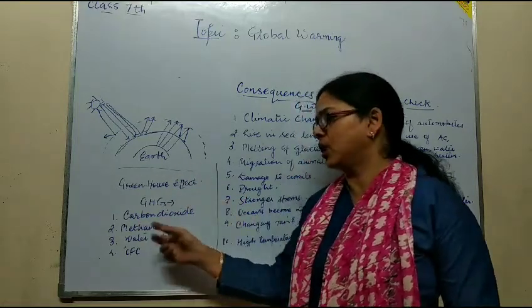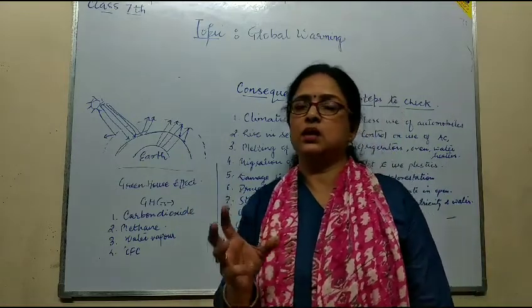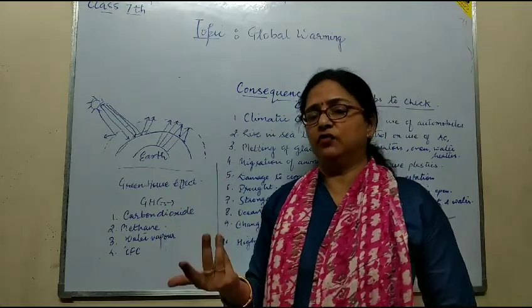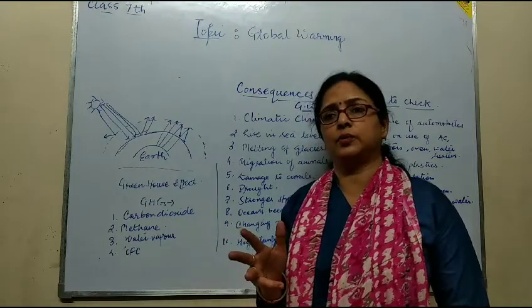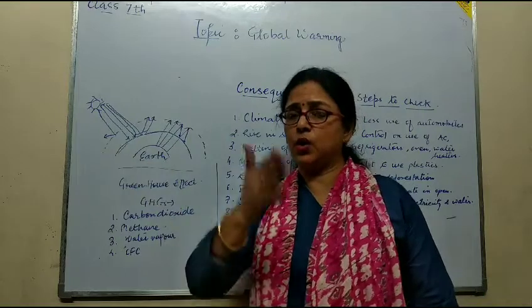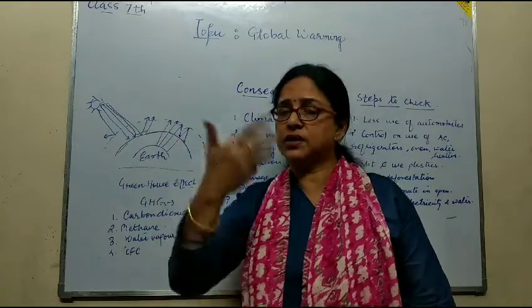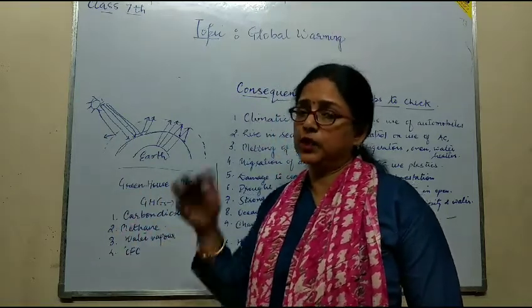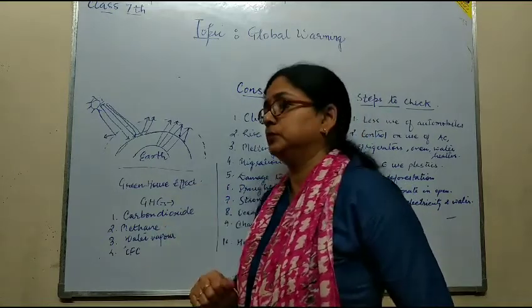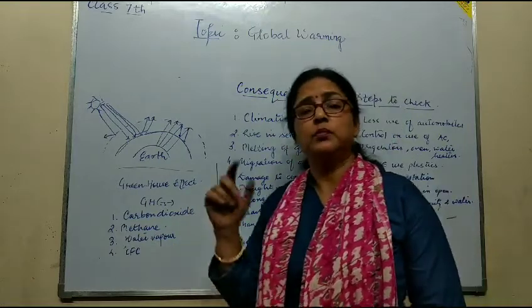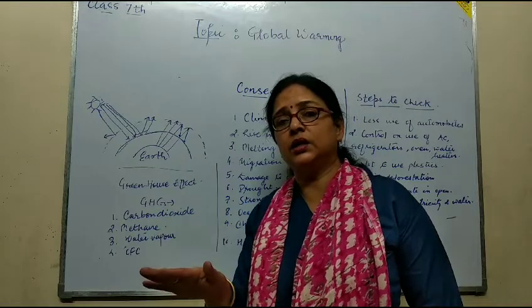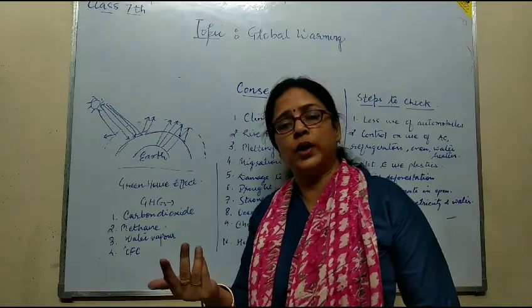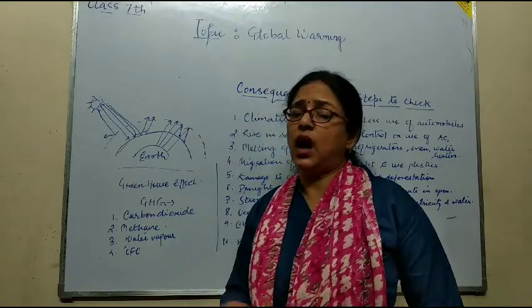Carbon dioxide is an odorless, colorless gas which is acidic and non-flammable. It is important because there is a cycle of carbon dioxide and oxygen between plants and human beings, so its presence in the atmosphere is essential. Another one is methane. We find methane under the earth's surface or under the sea level. It is also an odorless, colorless gas which is highly inflammable.